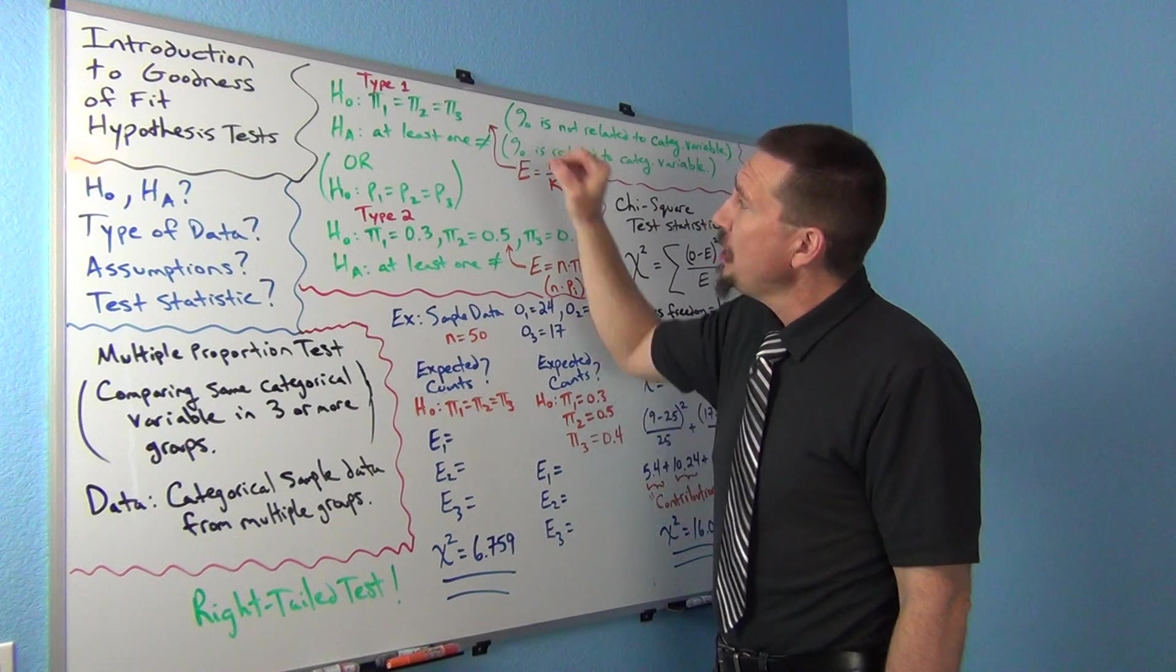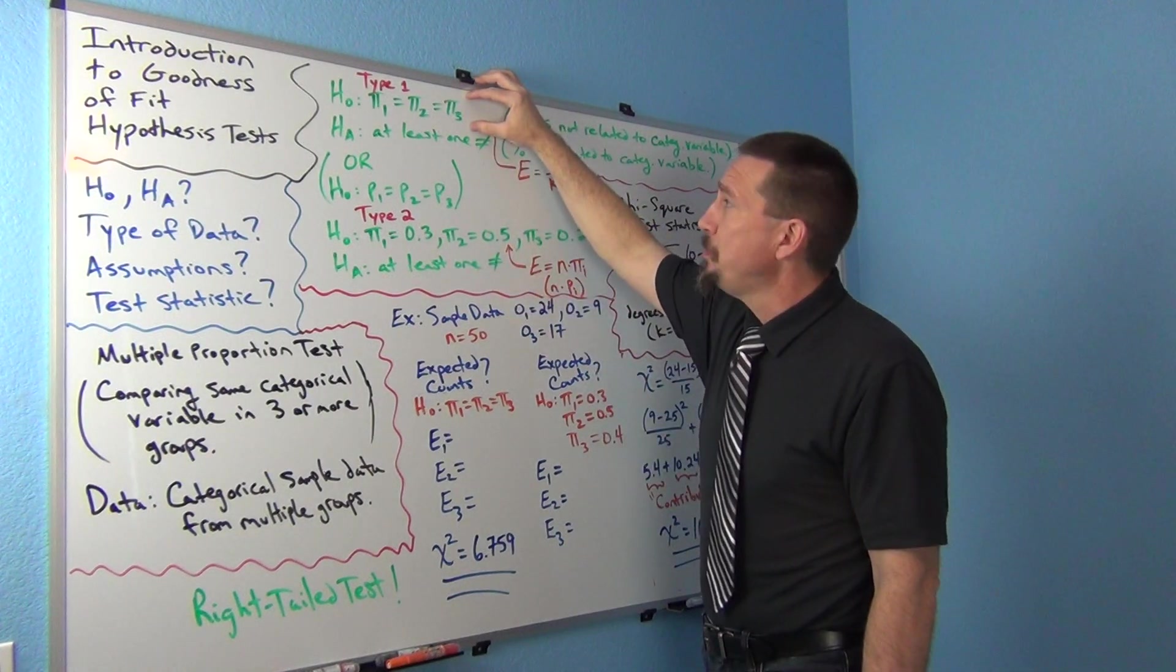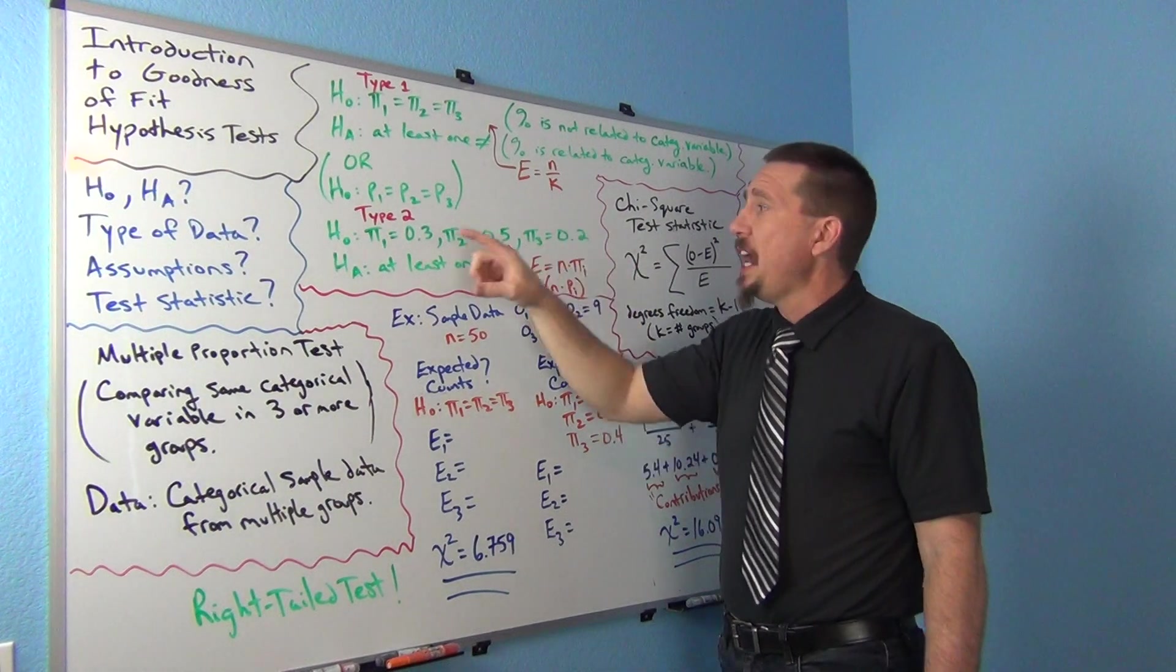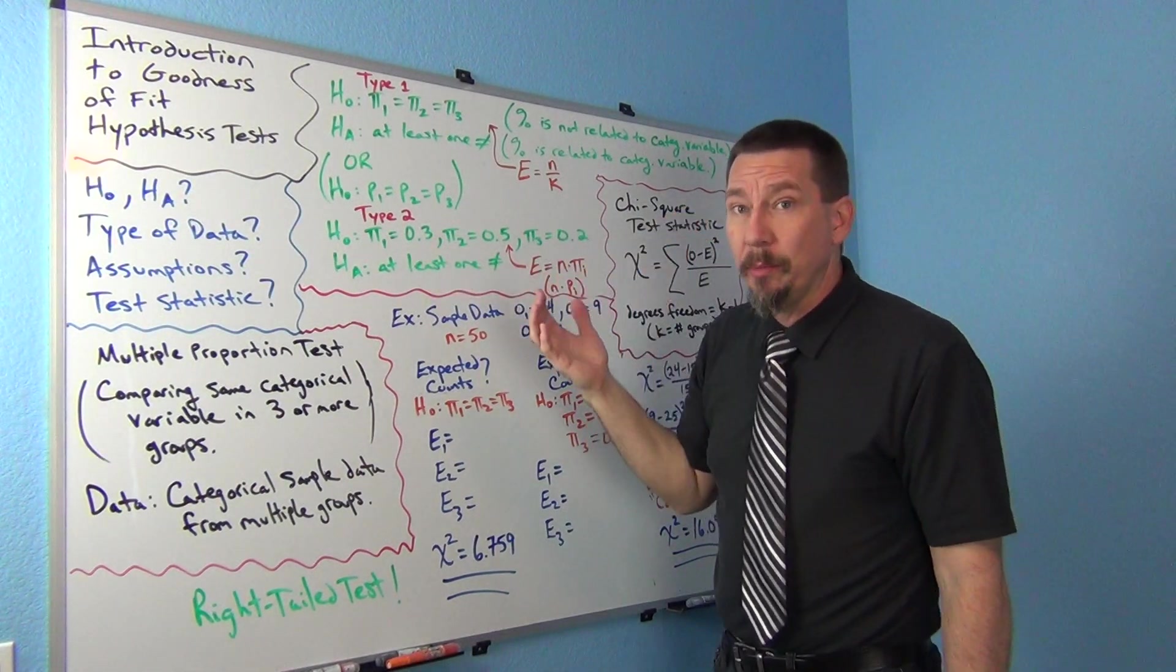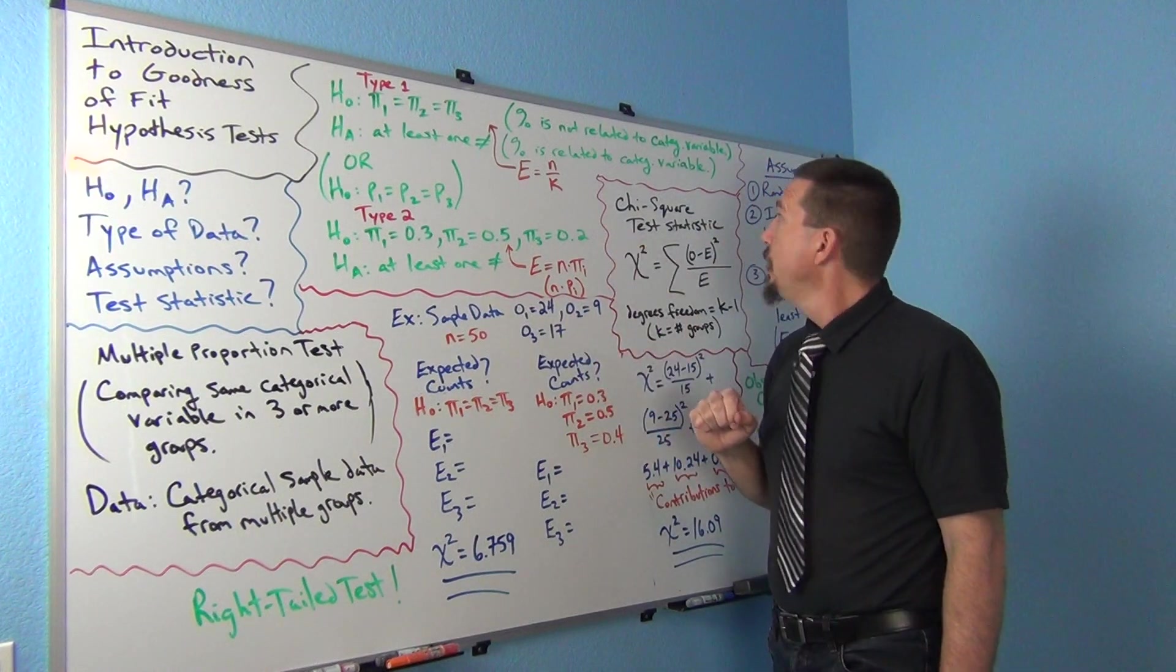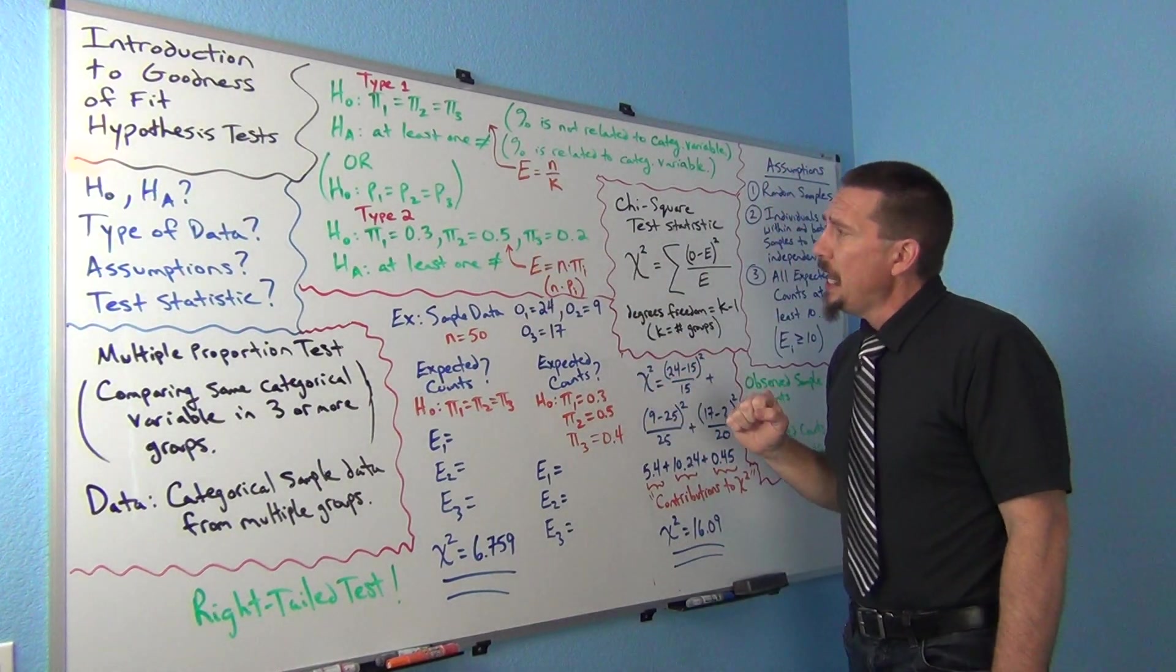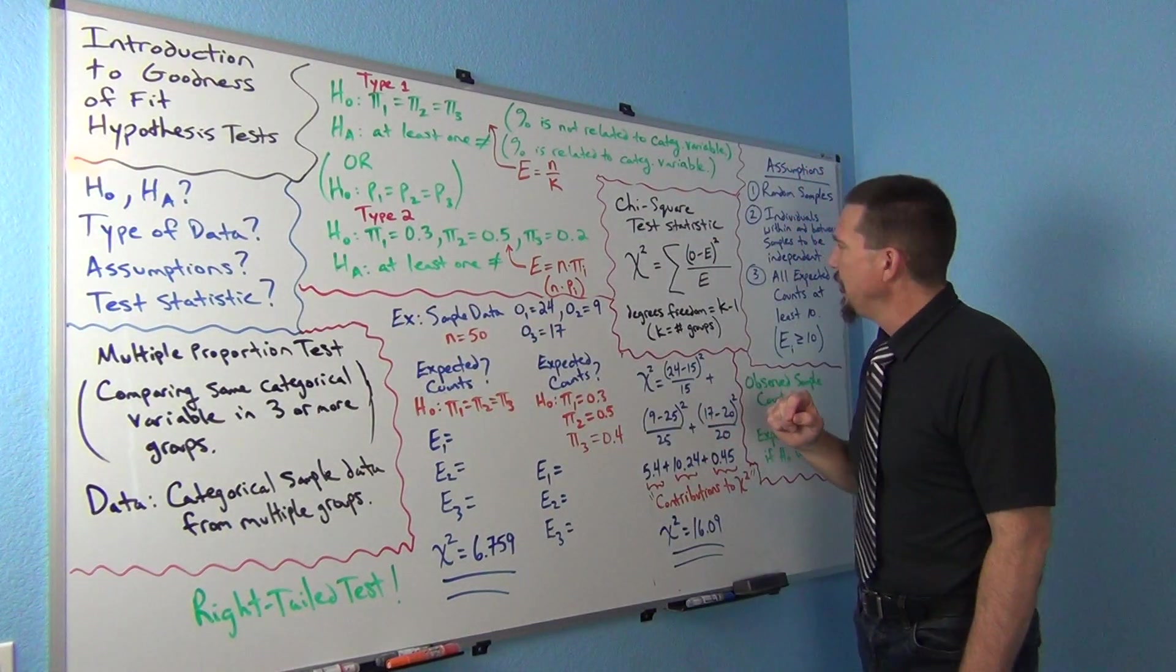So depending on what you're dealing with, you might have the case where all the p's are equal to each other, or π's, or you might have the case where each p or each π is equal to a specific number that was given to you in the problem that you're trying to see if that works or not. So that's sort of what the null and alternative hypothesis looked like. Let's get into the test statistic. We'll do assumptions at the end.